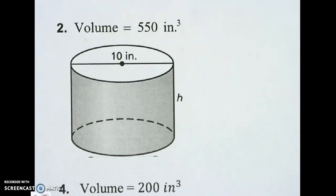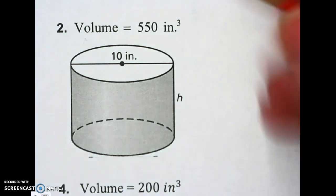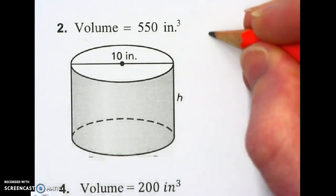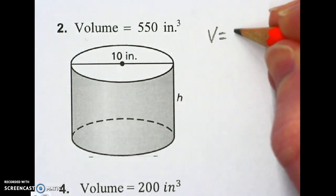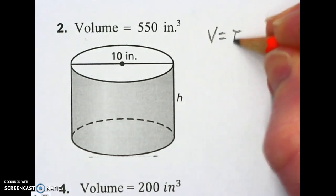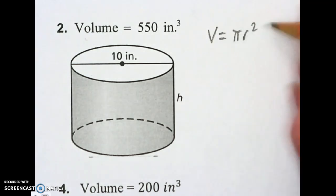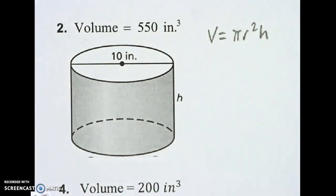Find the missing dimension of the cylinder. Round your answer to the nearest whole number. Let's do some math here. First thing I'm going to write out is my volume formula for a cylinder: V equals pi r squared times h.